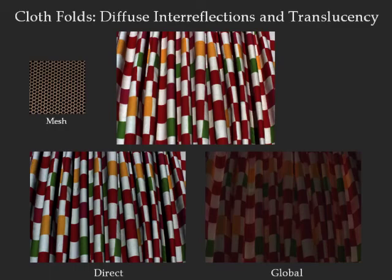In this example of a cloth with folds, the global component includes inter-reflections within the folds as well as translucency due to the fine spaces between the weaves of the fabric.